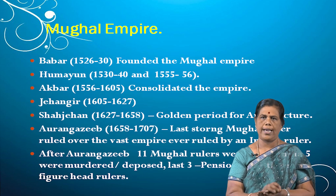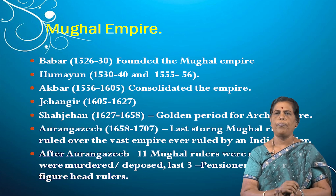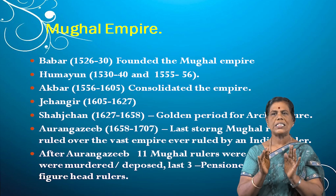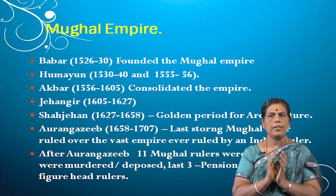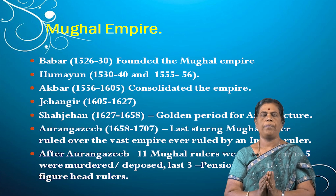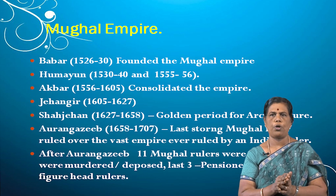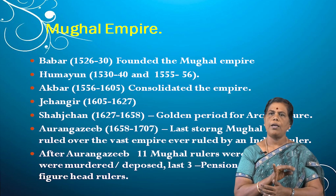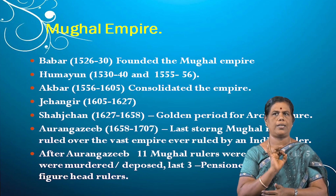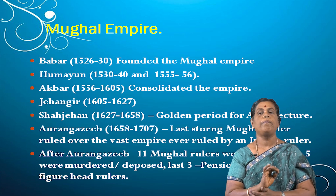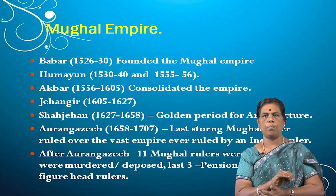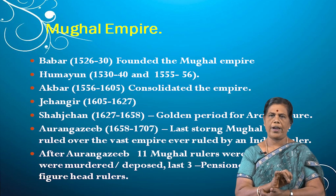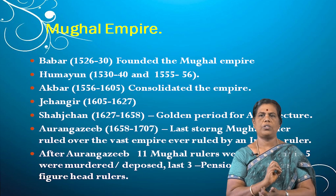A question arises: why was there an interregnum from 1540 to 1555? In that interregnum, Sher Shah, an Afghan ruler, ruled India. He was also a famous ruler, but he did not belong to the Mughal dynasty. The next ruler was Akbar, who ruled India from 1556 to 1605.